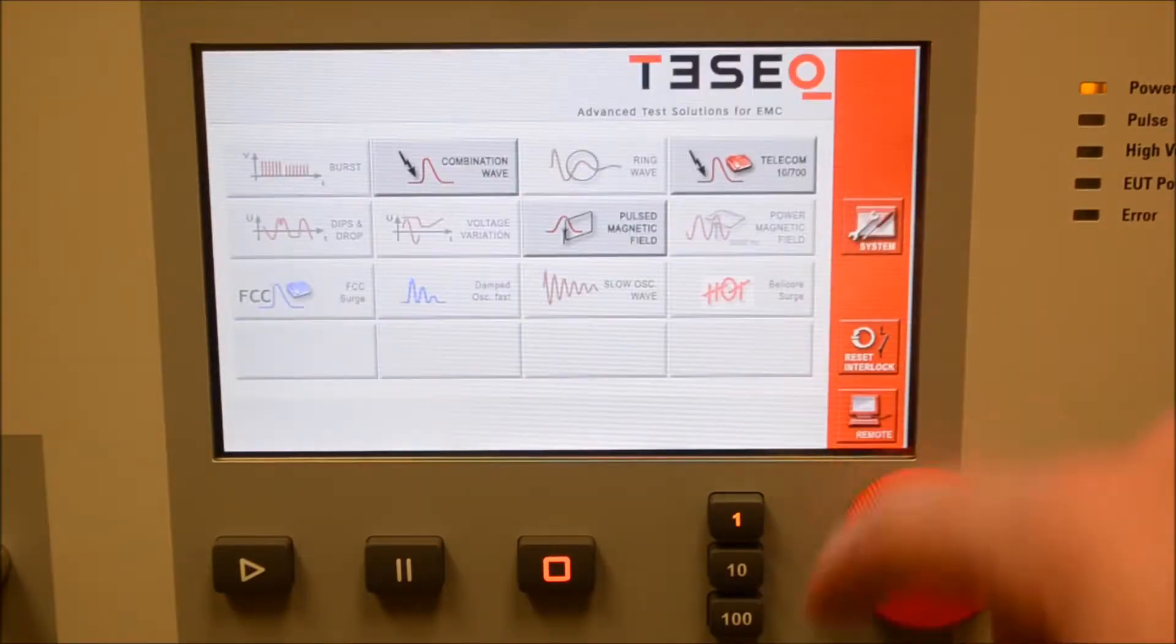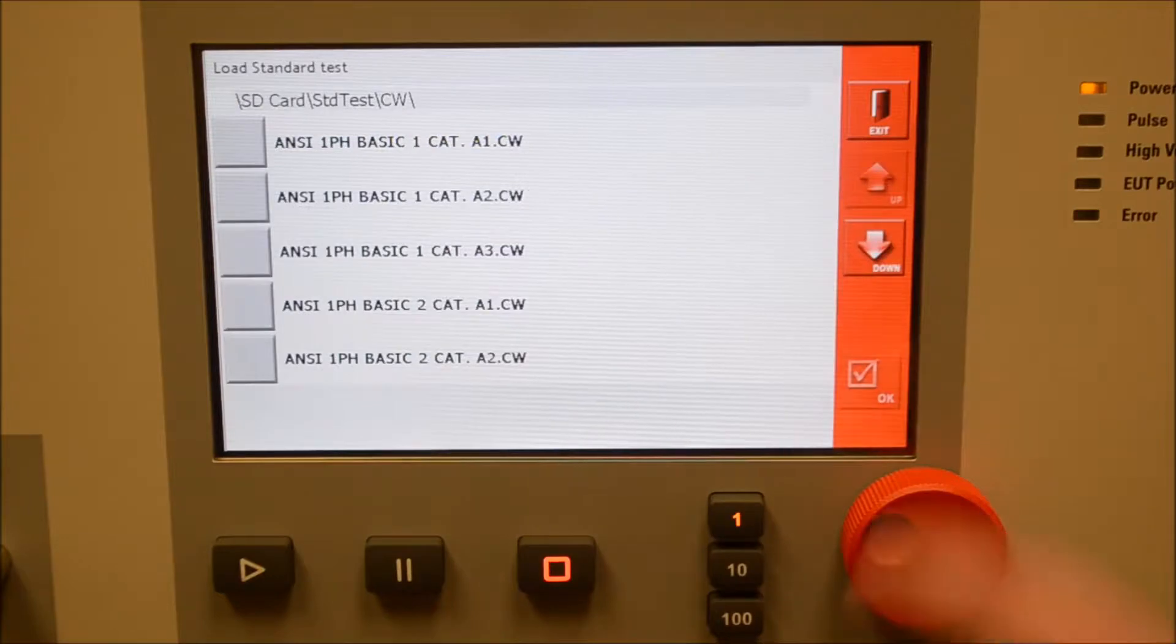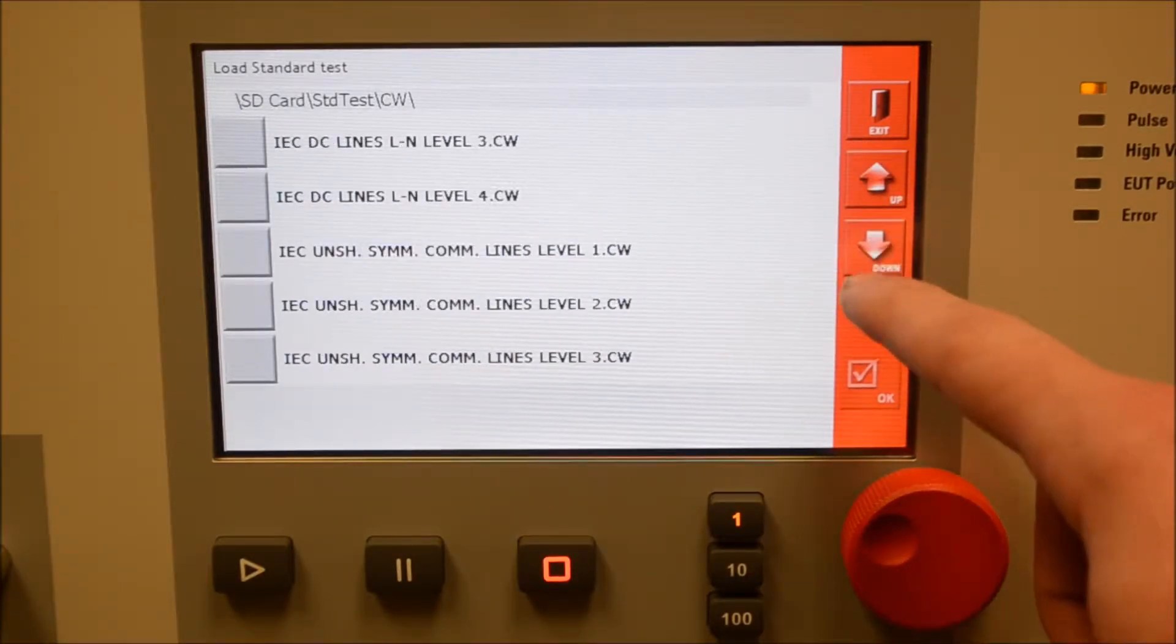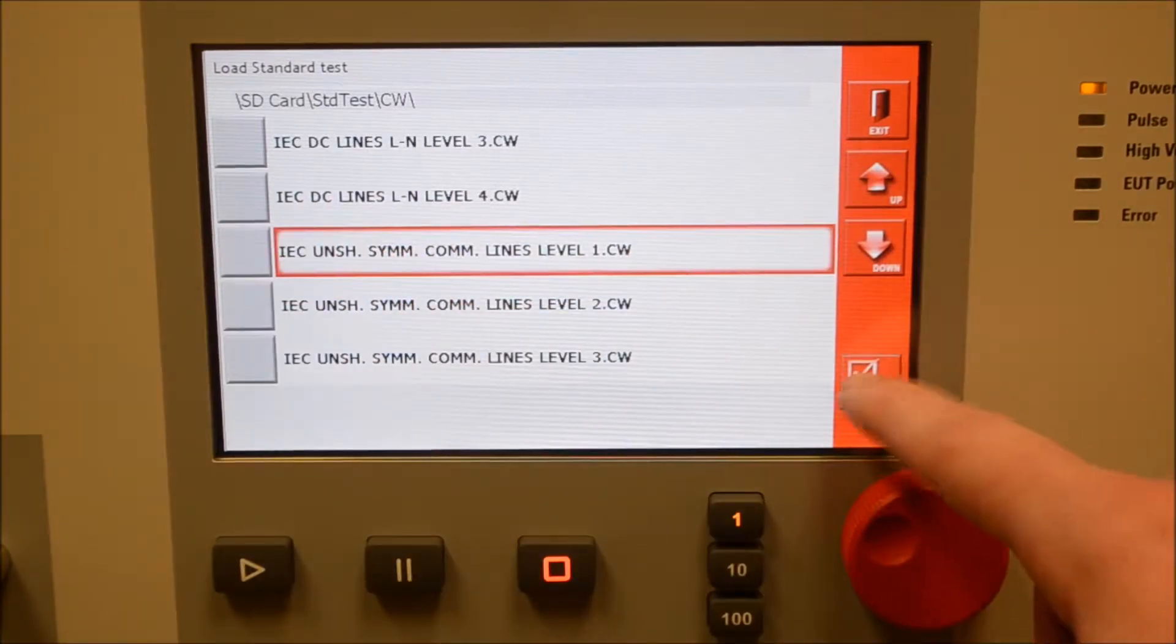Once we are in the test area, we can start by selecting the load standard procedures to make life easy. We can scroll through these ANSI standards and down past the power lines and into the unshielded symmetrical communication line testing. We'll select level one here.